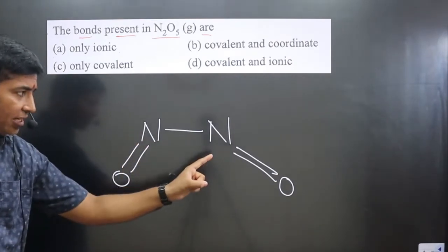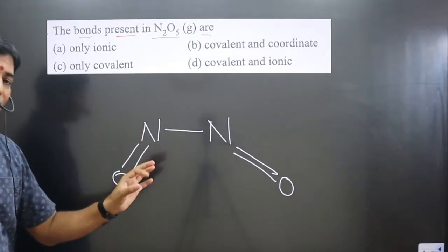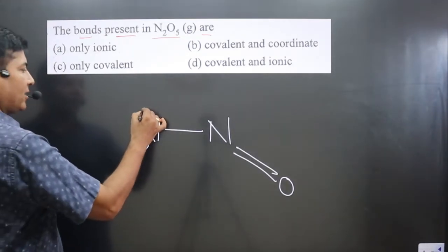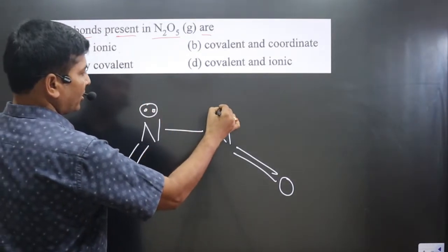If you look here, you can see the valency of each nitrogen is satisfied. Nitrogen can form a maximum of three bonds, but each nitrogen is having one lone pair.